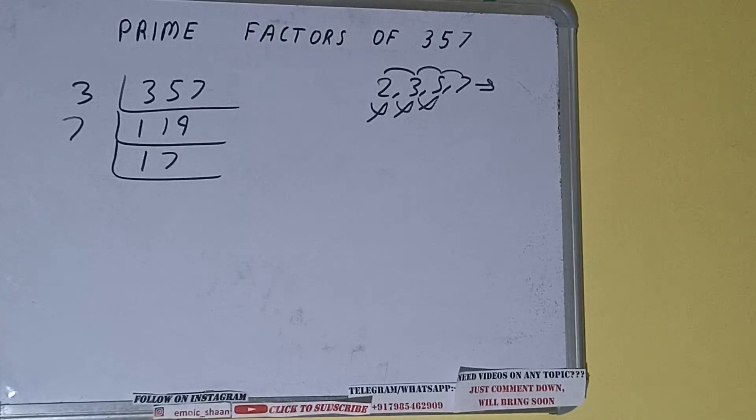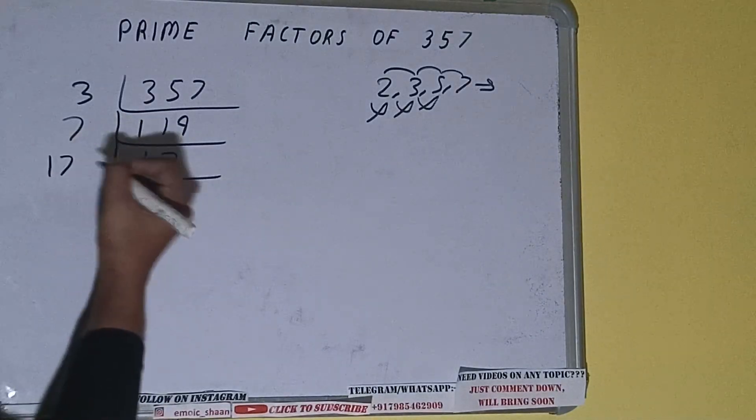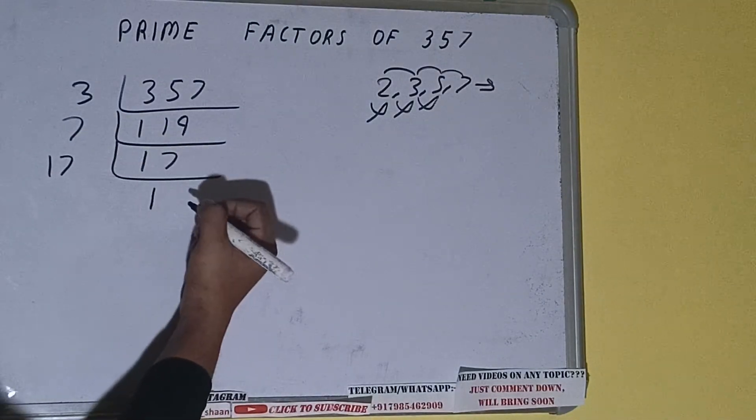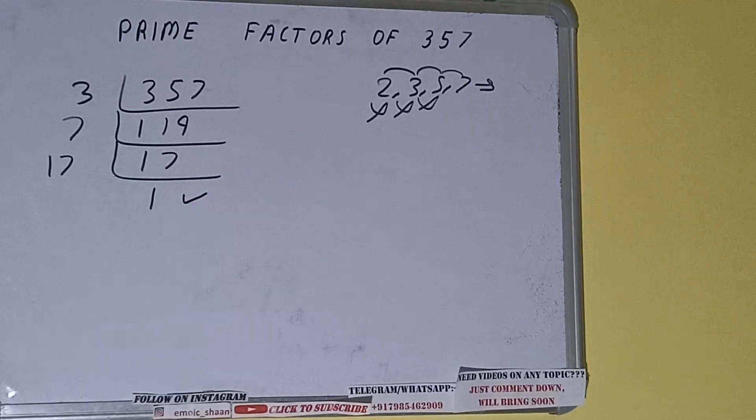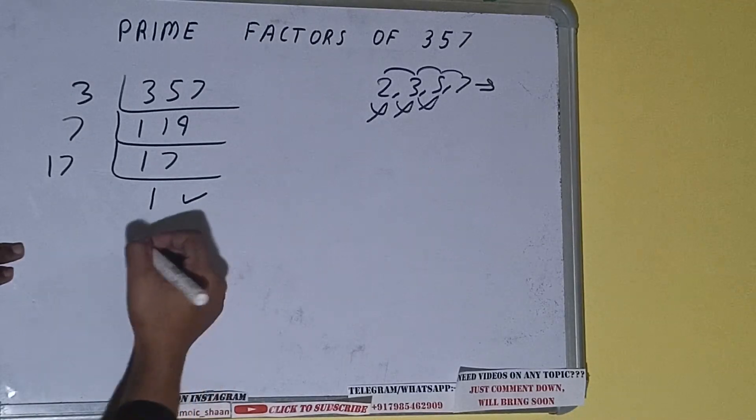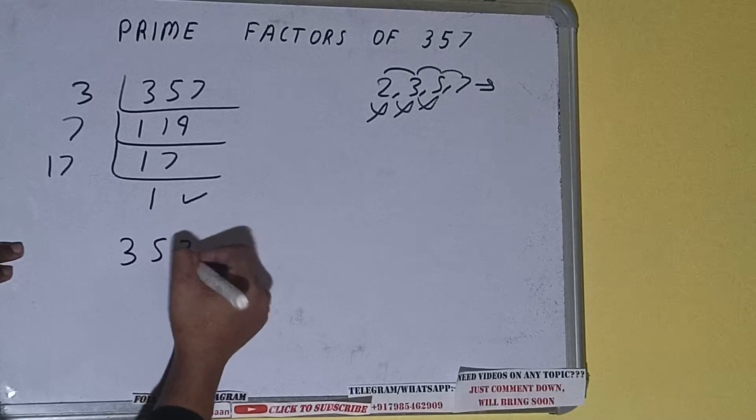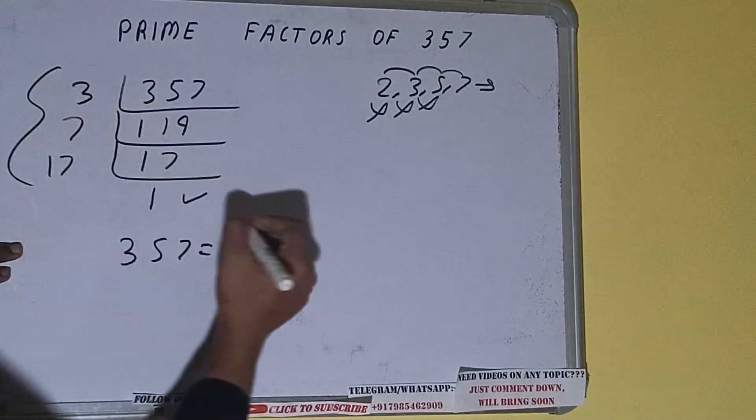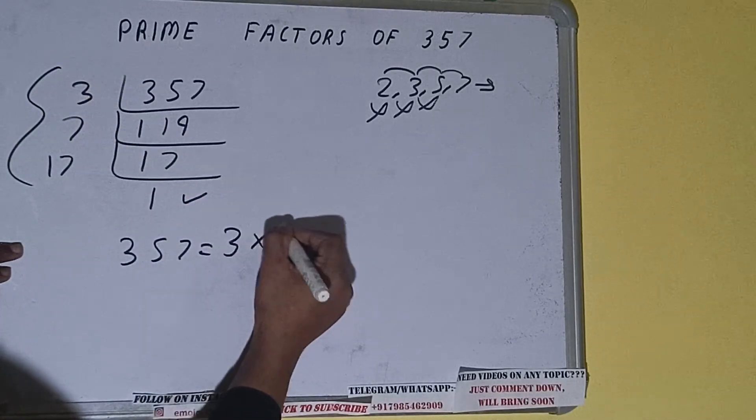So 17 is only divisible by itself, that is 17. Once we do so, we'll be getting 1. Once we get 1, we need to stop and do one last thing: prime factors of 357 will be whatever we have on the left-hand side, that is 3 × 7 × 17. That will be the answer.